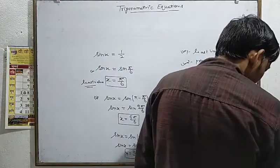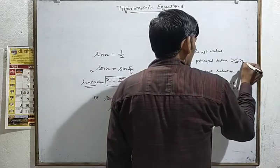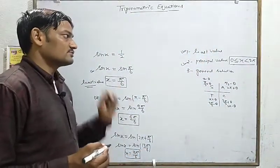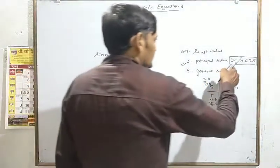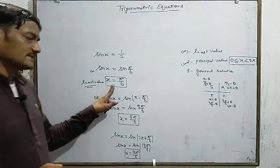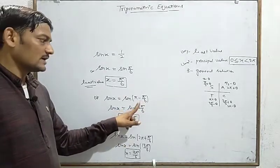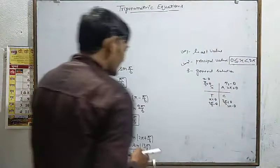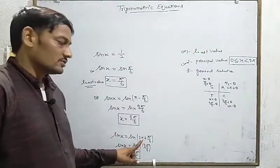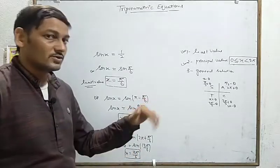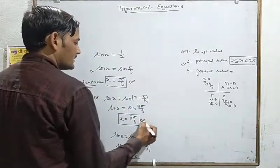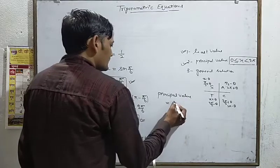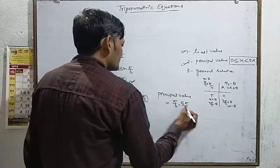Now we talk about principal value. The principal value is obtained when the value of x lies between 0 ≤ x < 2pi — that is, x lies between 0 and 2pi, including 0. 0 to 2pi means 0 to 360 degrees. Pi/6 lies between 0 and 2pi. For 5pi/6, since pi minus theta was done, it is already less than 360. So both values exist between 0 and 2pi. The value 13pi/6 is greater than 2pi, so it is excluded. Therefore, the principal value of sin x = 1/2 contains two values: pi/6 and 5pi/6.